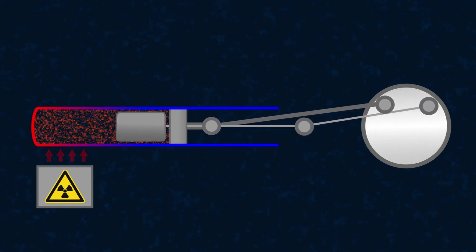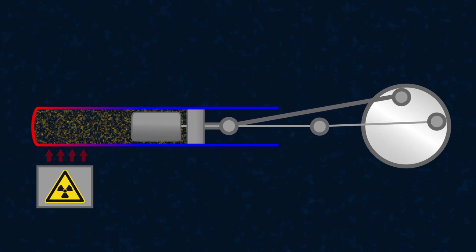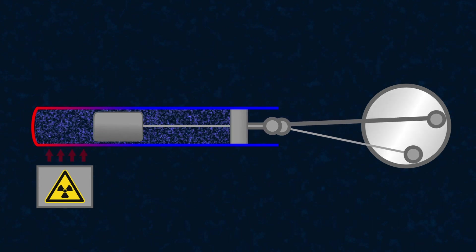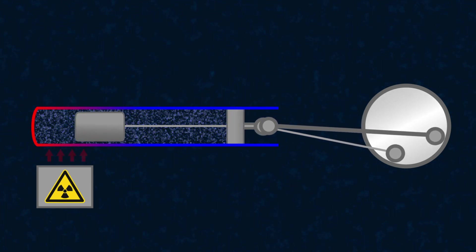As a result of this movement, the flywheel rotates again, shifting the displacer piston to the right, causing the cooled gas to move back into the hot part of the vessel, and the cycle repeats.